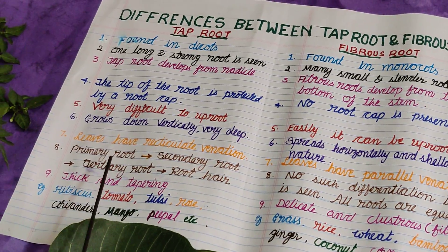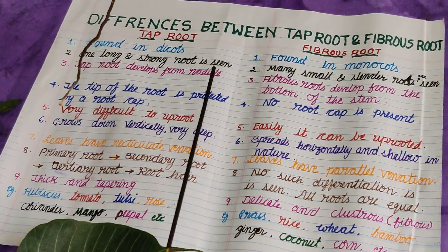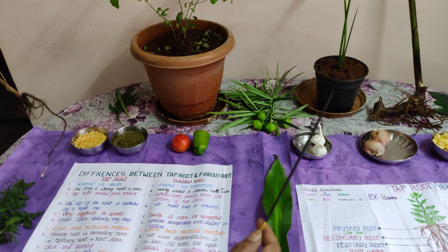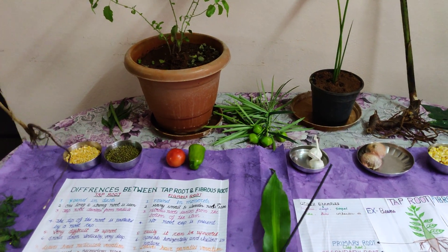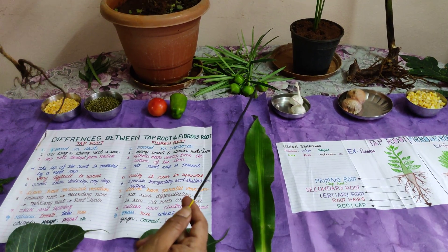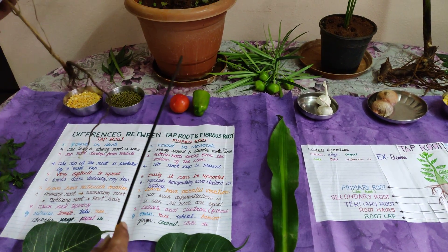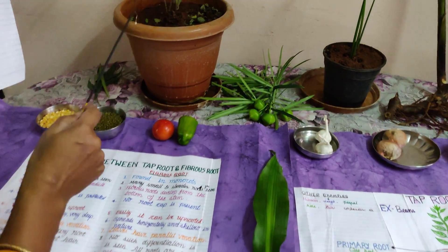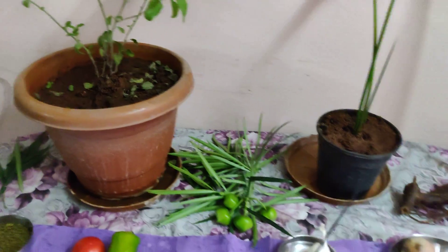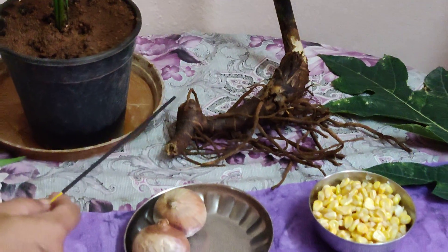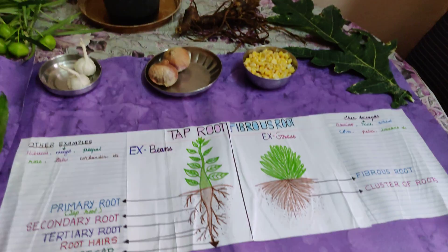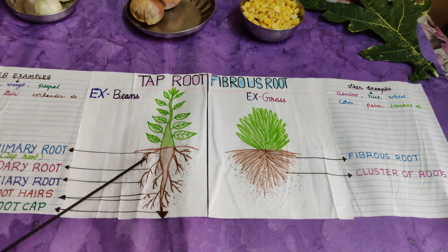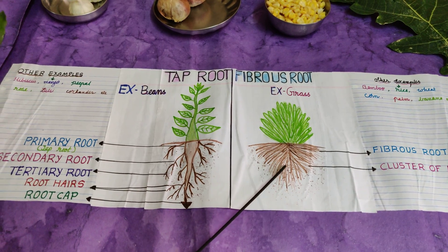In nature, you can see millions of plant species, but they have only two types of root systems: the tap root system and the fibrous root system. Hope you have understood the differences between the tap root and fibrous roots. Thank you.